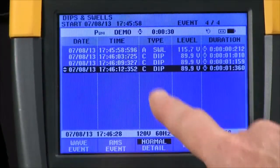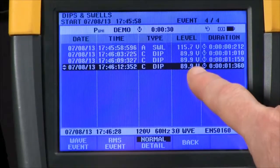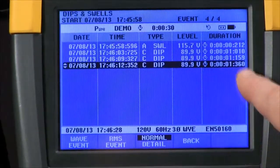F3 gives us a normal display and you'll see you've got a number of dips, the voltage level achieved, and the duration.